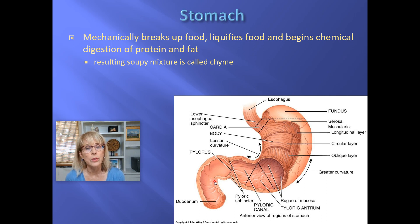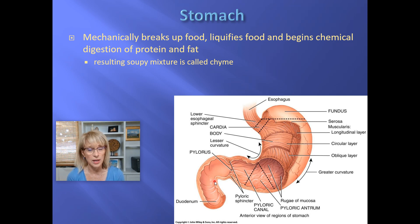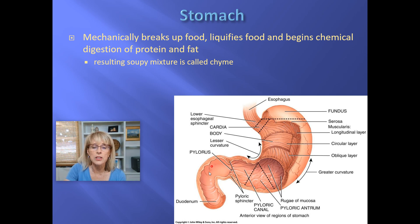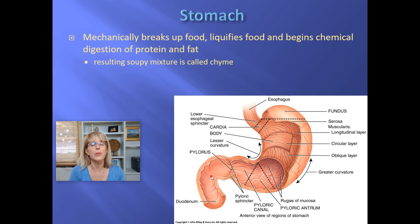The stomach sends less than a teaspoon at a time into the next section — specifically about 3 mL at a time. When that 3 mL enters the duodenum, the first thing that happens is the duodenum sends in a squirt of bicarbonate from Brunner's glands.